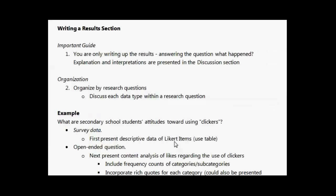I'm going to provide some tips for writing up a results section. The most important guide is that you are only writing up the results and answering the question: what happened? So you're just presenting the data in tables, means, or standard deviations, but you're not providing reasons, explanations, or interpretations. These explanations and interpretations are presented in the discussion section. It's tempting to provide these, but resist that temptation.